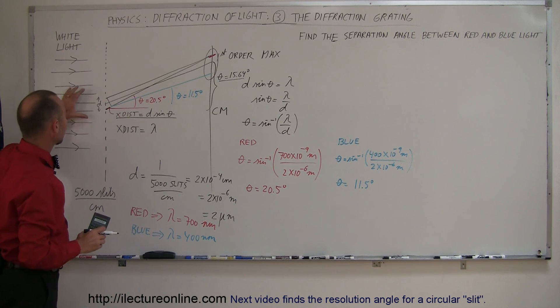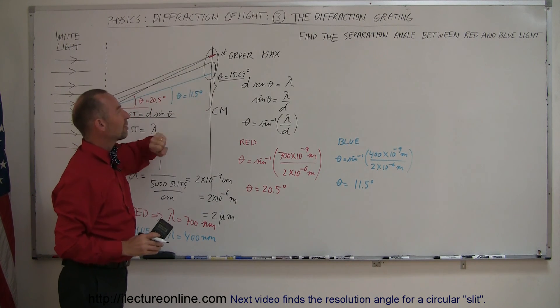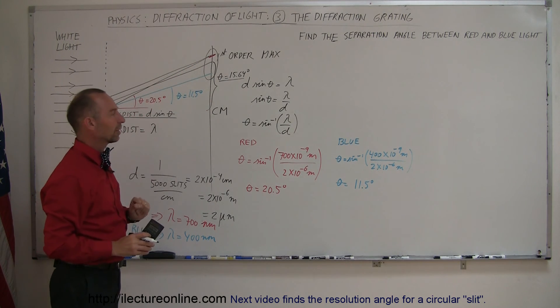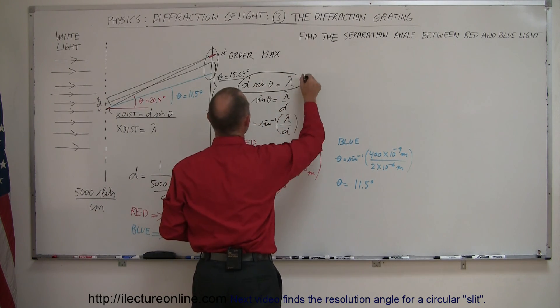For example, we shine white light through a diffraction grating, we measure an angle of a particular color at 15.64 degrees. What is the wavelength of that? So then we can turn this completely around. We can take the very same equation.